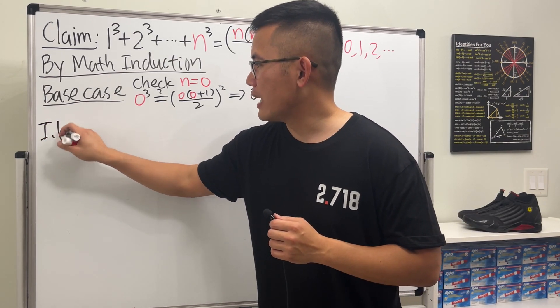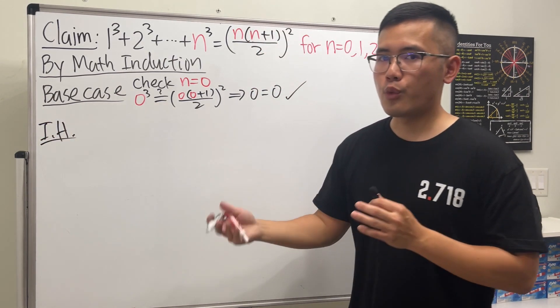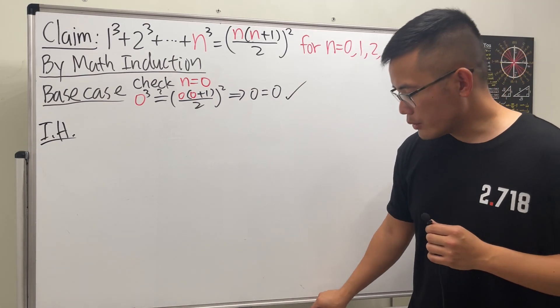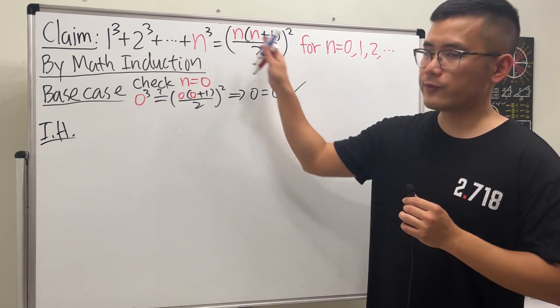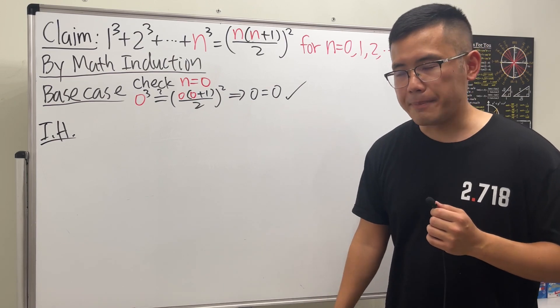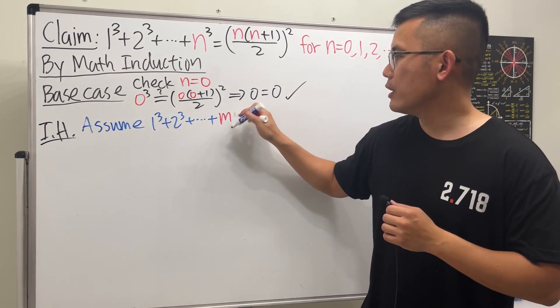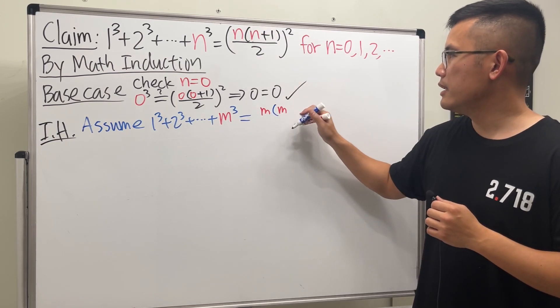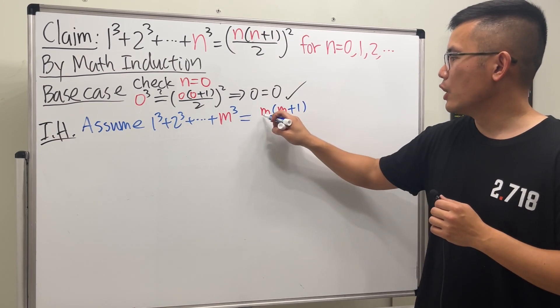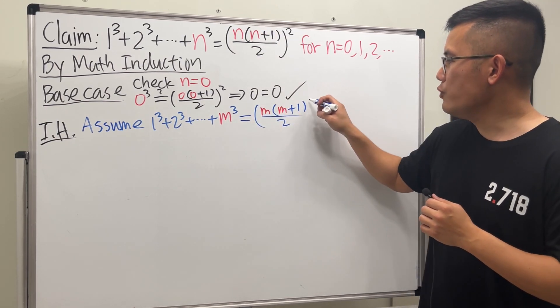Next, we are going to do the so-called inductive hypothesis. This right here requires the most amount of work. What we are going to do first is that we will assume this formula is true for some number m. So let's go ahead and just write this down. This is just the assumption that we are making right now.